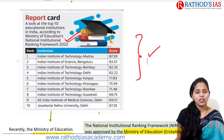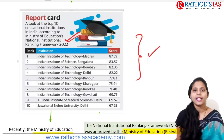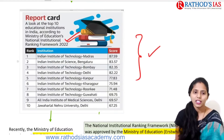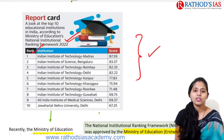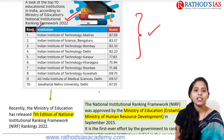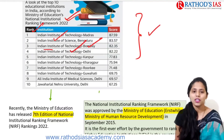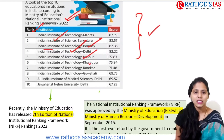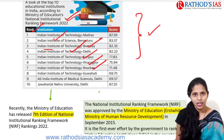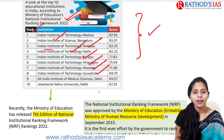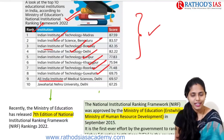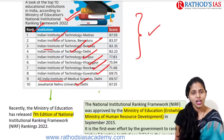An infographic from The Hindu newspaper shows the top institutions. The first rank is occupied by IIT Madras, second is IISc Bangalore, third is IIT Bombay, fourth is IIT Delhi, fifth is IIT Kanpur, sixth is IIT Kharagpur, seventh is IIT Roorkee, eighth is IIT Guwahati, ninth is AIIMS Delhi, and tenth is Jawaharlal Nehru University Delhi. These are the top 10.